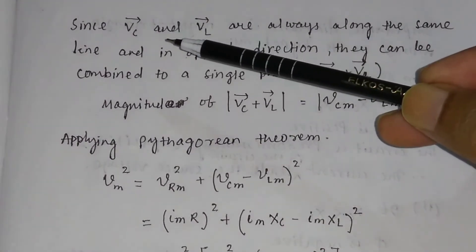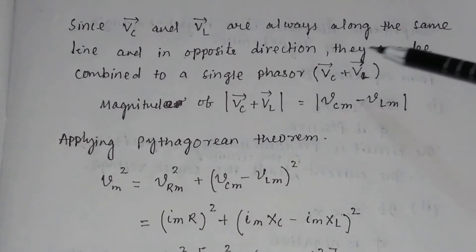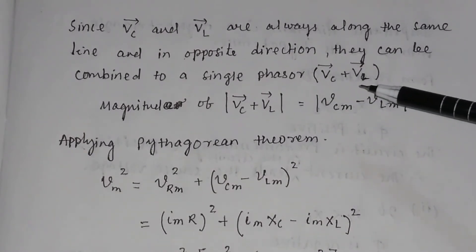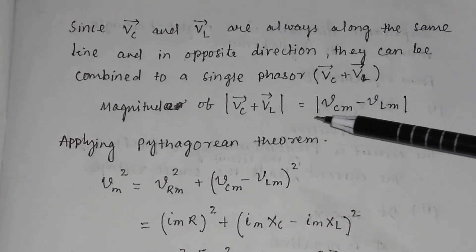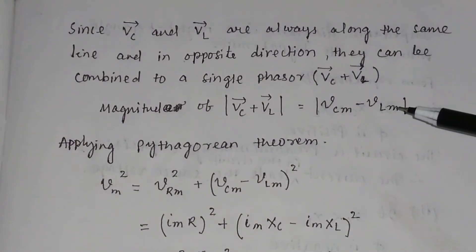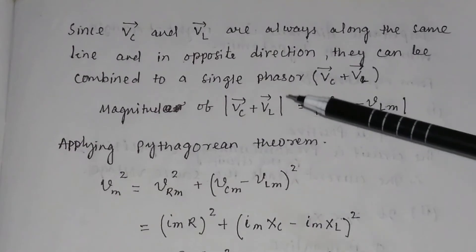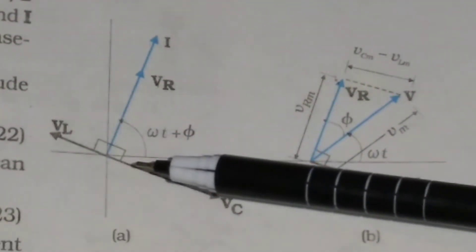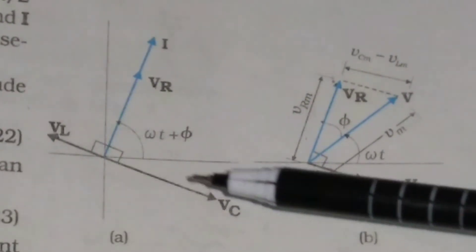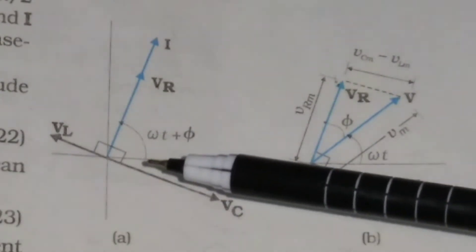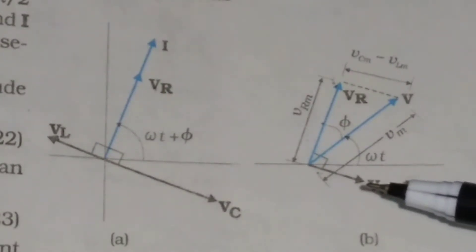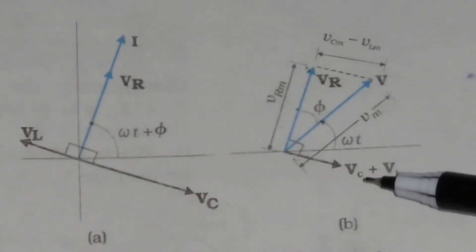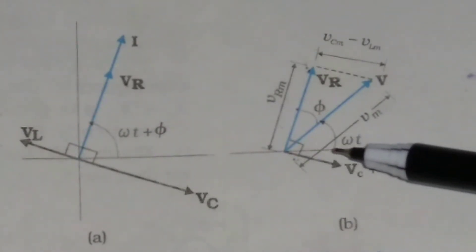Since the phasors VC and VL are along the same line but in opposite directions, they can be combined into a single phasor VC + VL. The magnitude of this combined phasor is VCm − VLm. From the phasor diagram, VC is along one direction and VL is along the opposite direction, so they combine into a single resultant phasor VC + VL with magnitude VCm − VLm.